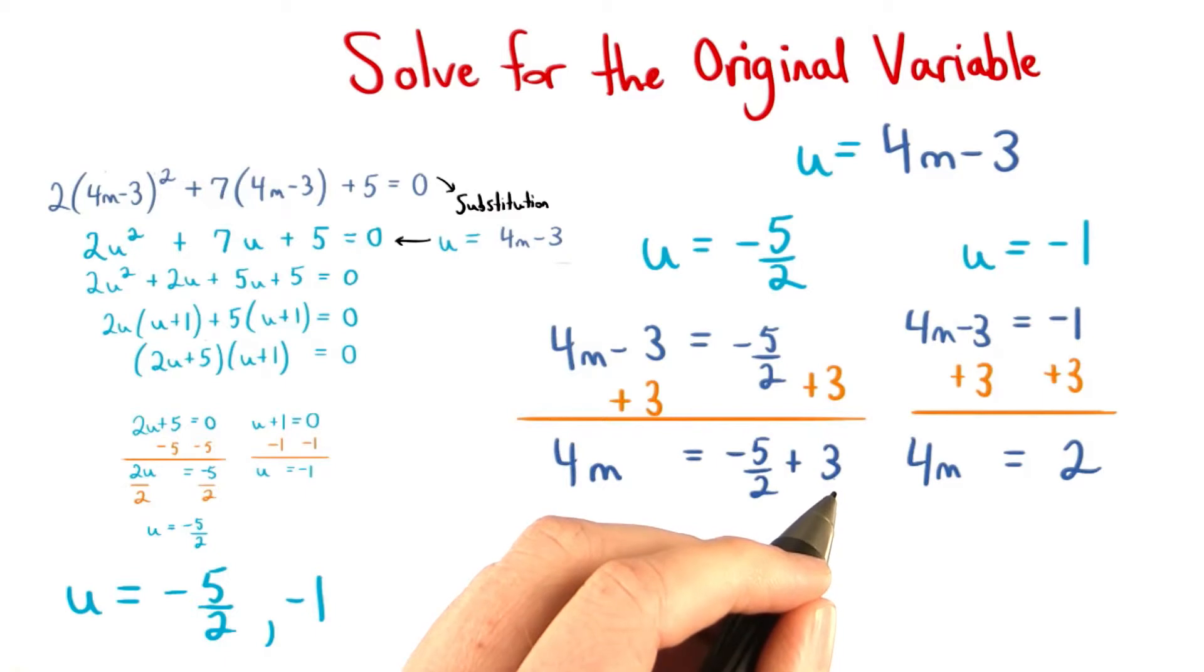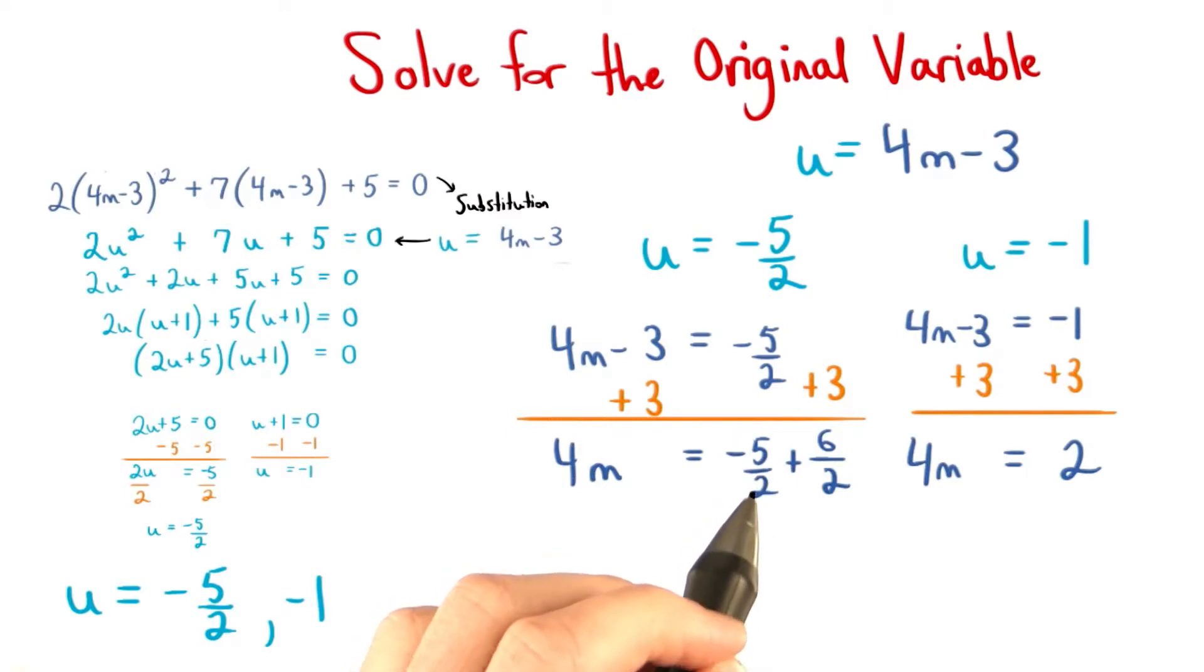We can change what this number looks like by writing it as a fraction. 3 is the same as 6 divided by 2. So really, we have negative 5 halves plus 6 halves. We'll have one more positive half on this side than we do negative halves. So these added together will give us positive 1 half.